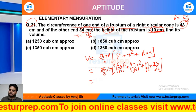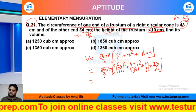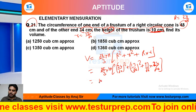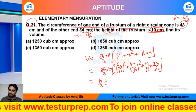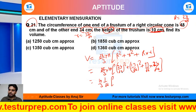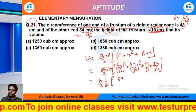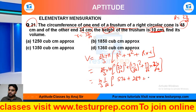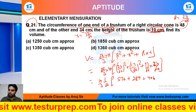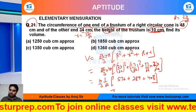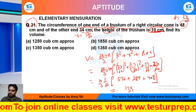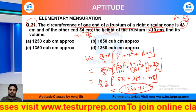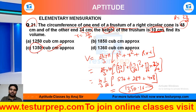Chalo, pi jo throughout common hai, 1 pi se aap 1 pi cancel out kar sakti ho, it will become 10 divided by 3 or 1 divided by pi — 1 pi hi bachegi. Yahan se pi square bahar common aayega, yoh 576, yoh 289. On solving this you will get 1350.16 something, which is approximately 1350, jo ki mera option rehta hai.